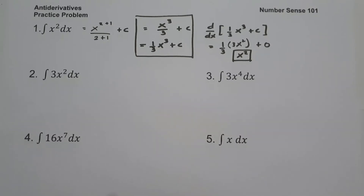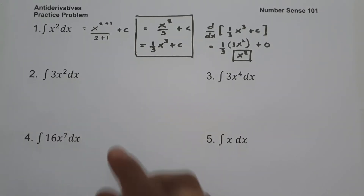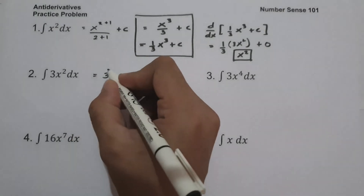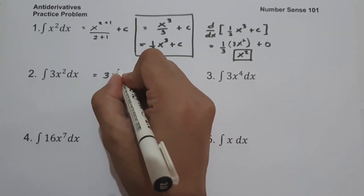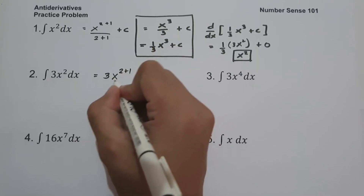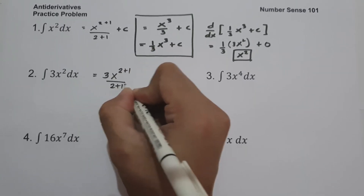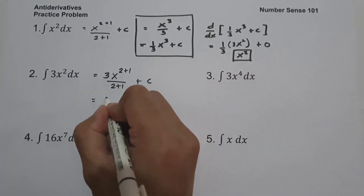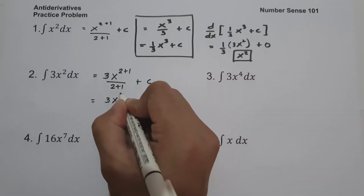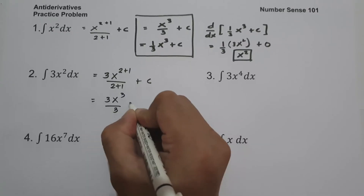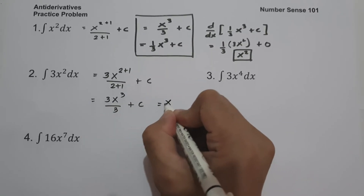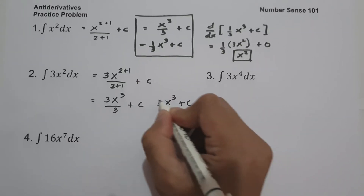What about number 2? What is the antiderivative of 3x squared dx? This will be 3, then x — let us add 1 on the exponent, so this will be 2 plus 1 over 2 plus 1, and then we add constant c. So this will be 3x raised to 3 over 3 plus c, or simply x cubed plus c.